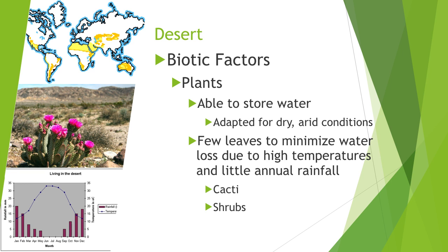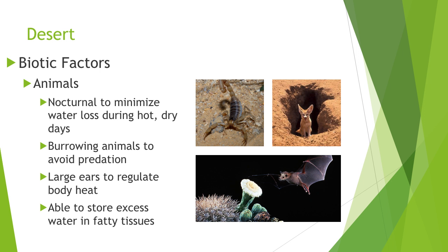Desert biotic factors include plants able to store water, adapted for dry conditions. Plants usually have few leaves to minimize water loss — transpiration is how plants lose water — so desert plants have spines instead of leaves to reduce water loss. Desert animals are nocturnal to minimize water loss during the day, frequently burrow to avoid predators since there's little vegetation to hide under, have large ears to regulate body heat, and have the ability to store excess water in fatty tissues.